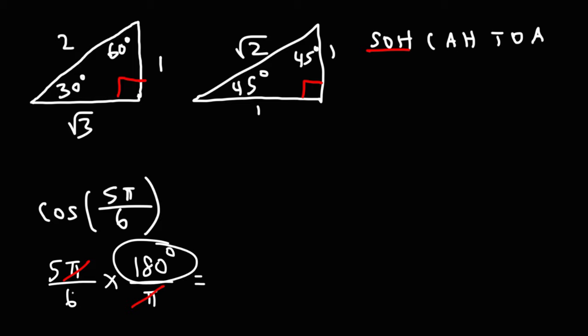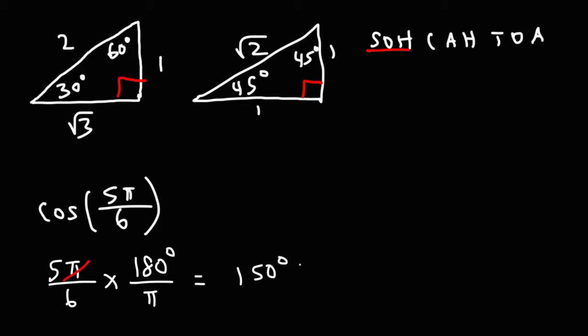180 divided by 6 is 30, and 30 times 5 is 150. So cosine 5π over 6 is the same as cosine 150 degrees.